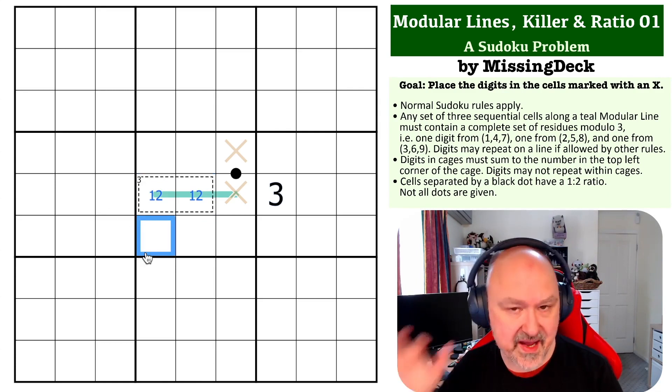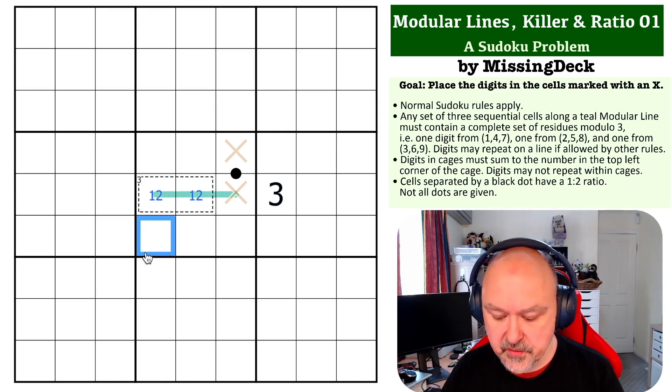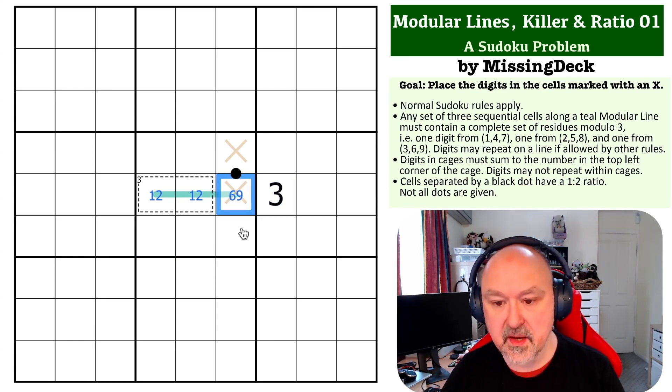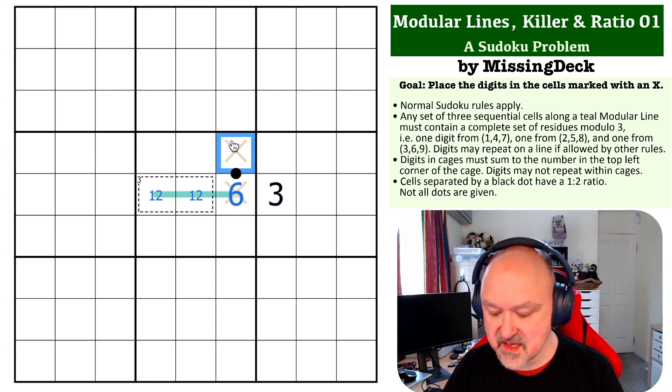One is from the modulo 1-4-7, two is from the modulo 2-5-8, so this digit must be from 3-6-9. Well, it can't be three because there's a three in the row, and nine isn't valid—this would have to be 4.5 or 18. So this has to be the six, this has to be the three, and that is the solution to the problem.